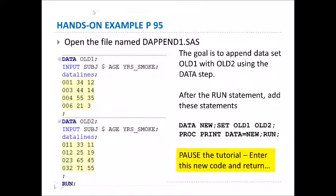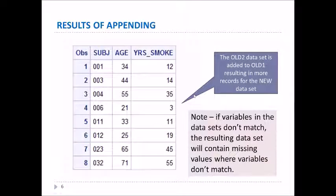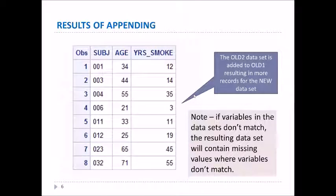Go ahead and enter this code into dappend1.sas, get it to work, pause the tutorial, and when it runs for you, return. Okay, this is the result you should get. You'll see you have the first four records followed by the appended next four records in the resulting dataset. If you have variables in the dataset that don't match, the resulting dataset will contain some missing values where the variables don't match.